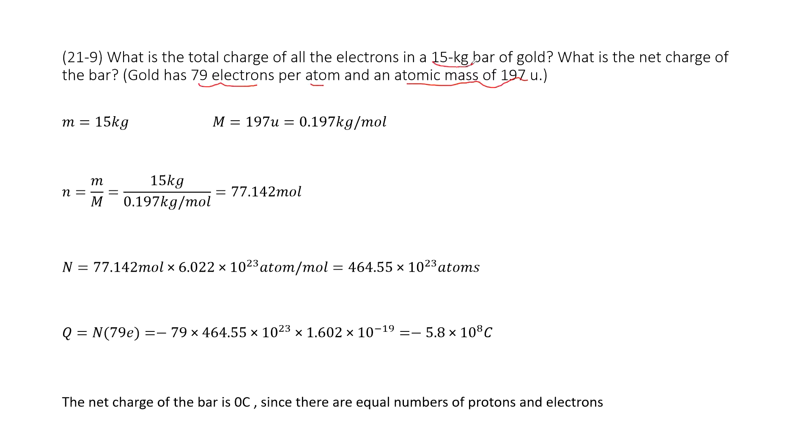This is the mass. This is the atomic mass. It looks like you can find the number of these atoms, gold atoms. And for each atom, it tells you 79 electrons. So in this way, you can find the electrons.